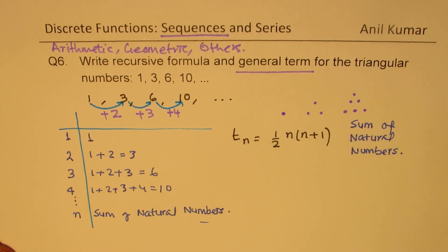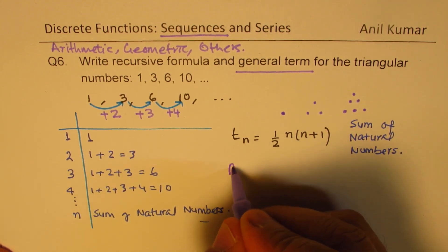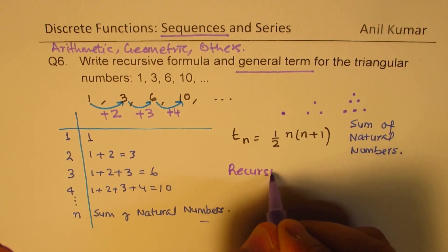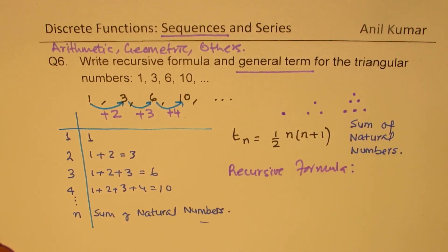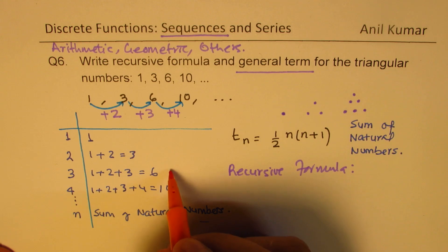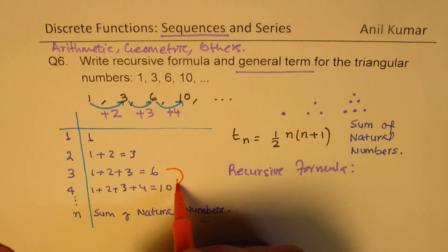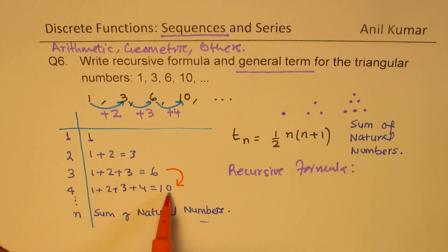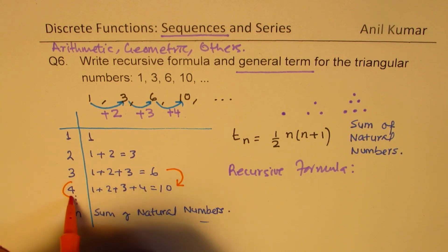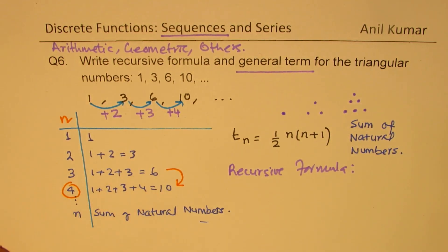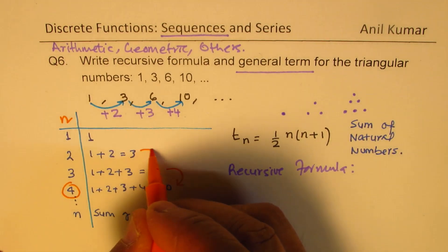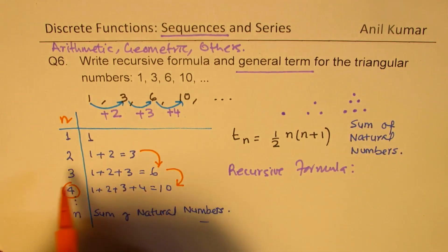That is to say, we have to see how do we get 10 from 6. If we know 6, how do we get 10? We are adding this number 4, which is our term number n. Do you see? Do you get the idea? How do we get 6 from 3? We are adding 3, which is n.